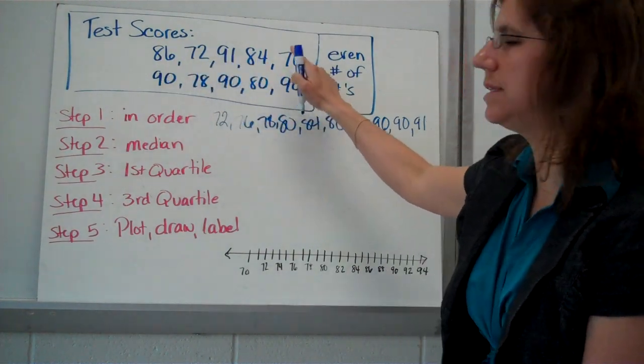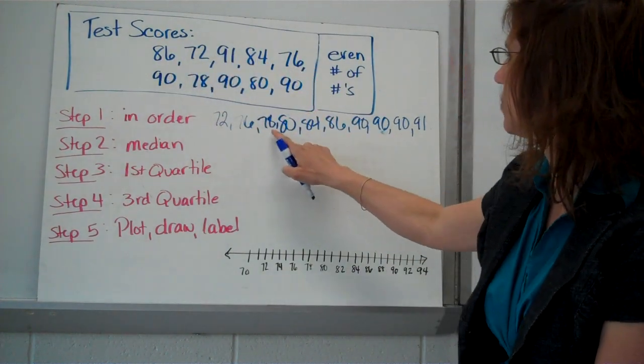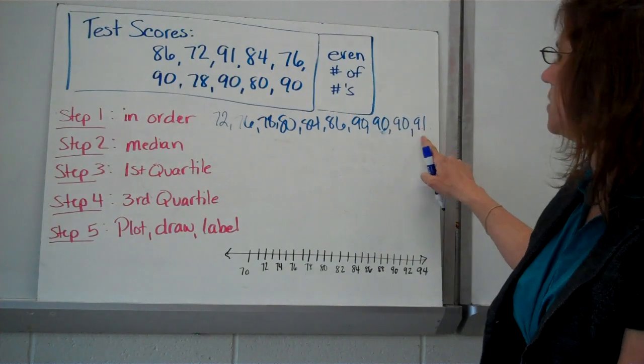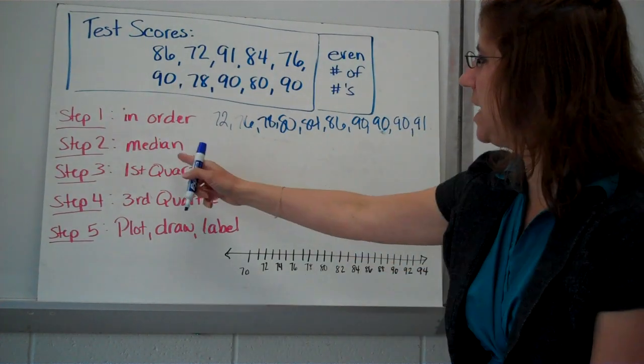There's 2, 4, 6, 8, ten pieces of data. 1, 2, 3, 4, 5, 6, 7, 8, 9, 10. All right. We're good to go there.